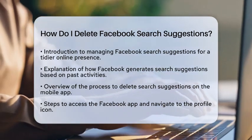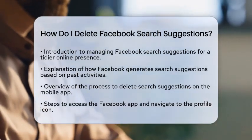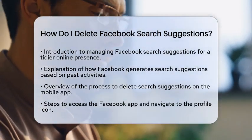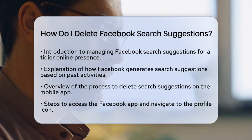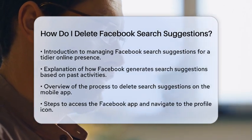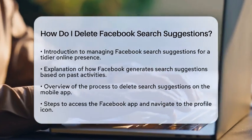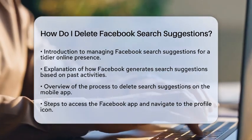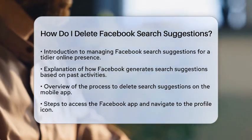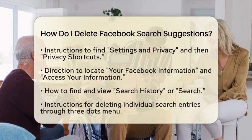Let's start with the mobile app. First, open the Facebook application on your smartphone. Once you are in, tap on your profile icon, which is usually at the bottom right corner of the screen. Next, scroll down until you see Settings and Privacy.